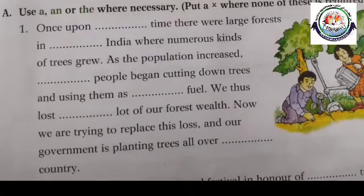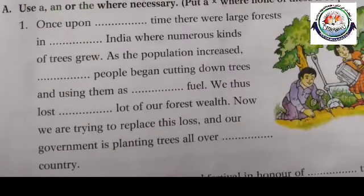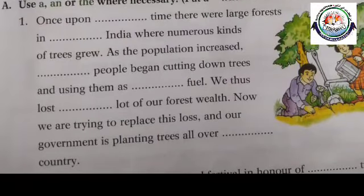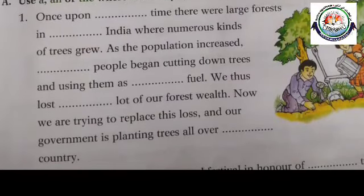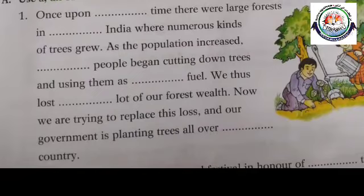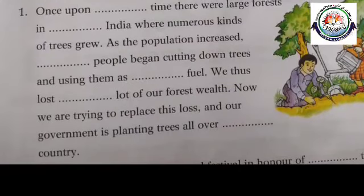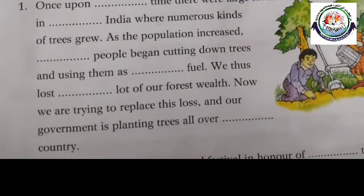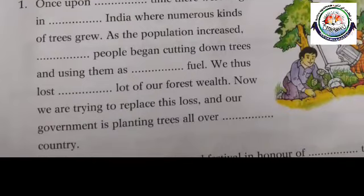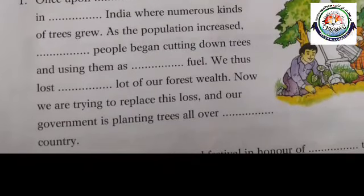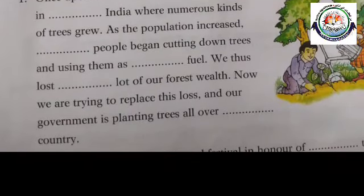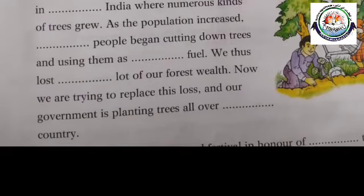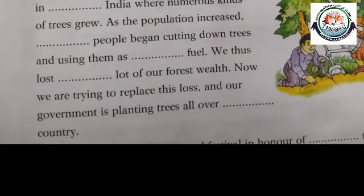the people began cutting down trees and using them as fuel. Here, 'the' is used just in the beginning and then we are not using any article in the next. We just lost a lot of — you have to write 'a' there — our forest wealth. Now we are trying to replace this loss and our government is planting trees all over the country. Now you have to use 'the' in the last part.